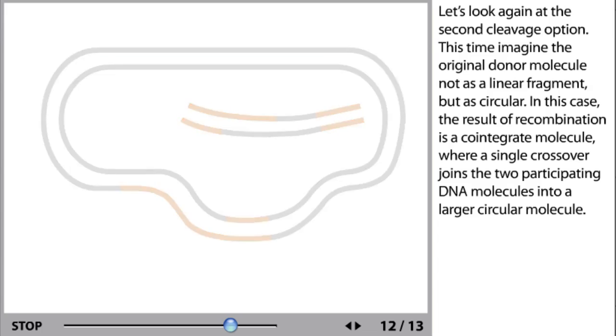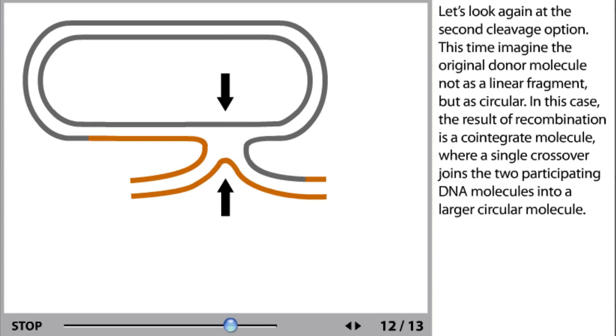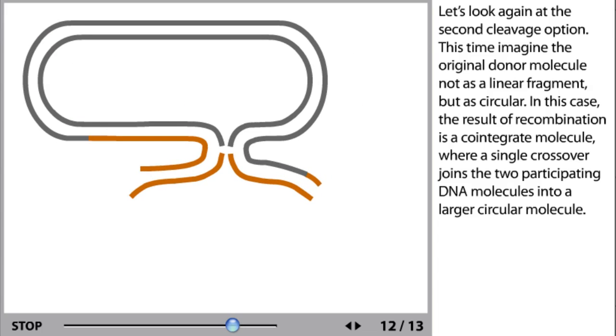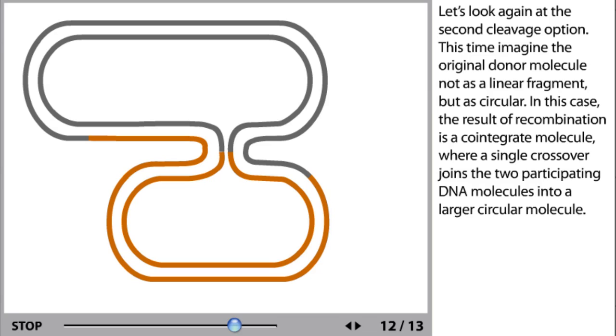Let's look again at the second cleavage option. This time, imagine the original donor molecule not as a linear fragment but as circular. In this case, the result of recombination is a co-integrate molecule where a single crossover joins the two participating DNA molecules into a larger circular molecule.